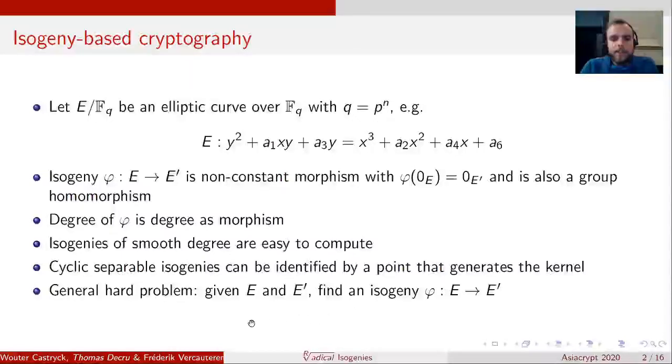Now in isogeny-based cryptography, there's a general hard problem as follows. Given two elliptic curves E and E', find an isogeny between them. This is a very general problem, and there are many specific instantiations. However, given the correct setting and parameters, this is assumed to be very hard.